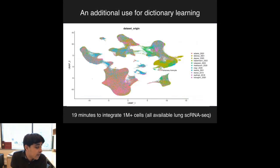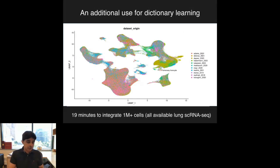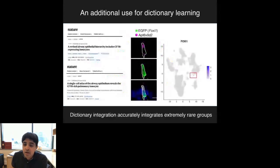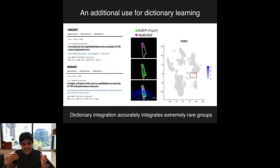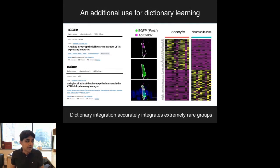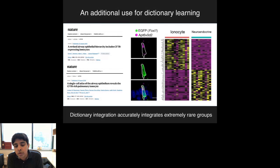We can now take more than a million cells from the human lung and integrate them in less than 19 minutes on a standard laptop. Cells now cluster by shared biological cell type, not original study. One cool result is a very small cluster of a recently discovered cell type called the pulmonary ionocyte—less than 0.05% of all cells in the lung, discovered in both human and mouse. In any individual study you typically only get five to ten of these cells because they're so rare, but by integrating many studies together we can consistently identify them and do a deep dive into their transcriptome. We can identify both lowly and highly expressed marker genes, and we see a strong enrichment for signaling channels and ion channels that these cells use to regulate the chemical environment.